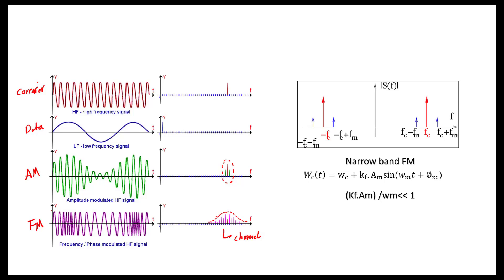That's why FM, and also phase modulation, are preferable compared to AM modulation in terms of noise. However, they do need a higher bandwidth. There is also a specific variant called narrowband FM, which occurs when KF · AM divided by the frequency of data is less than one. In this special case, the output spectrum is close to an amplitude-modulated high-frequency signal — very similar to AM.